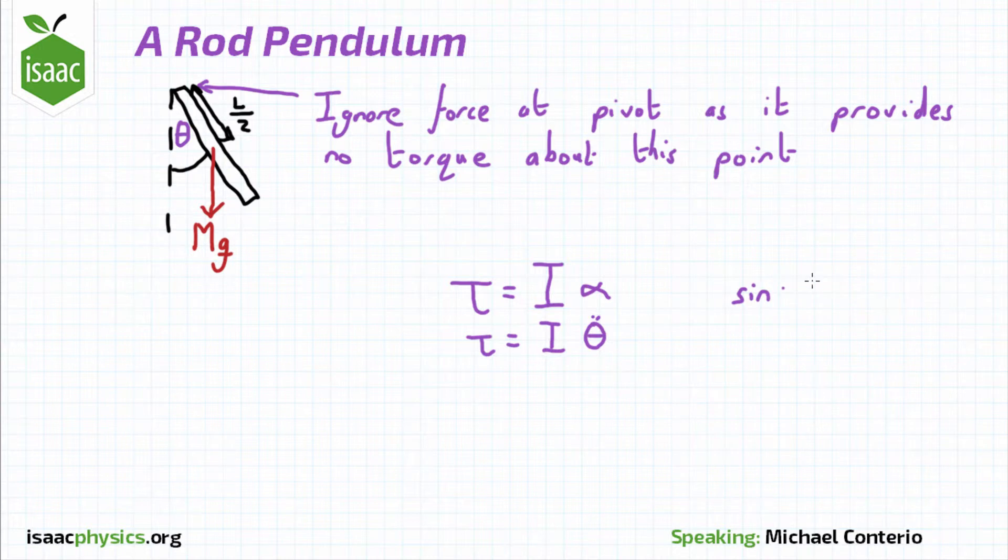As well as using the results from the past two parts of the question, you'll probably need to use a small angle approximation that sine theta is approximately theta for small theta.